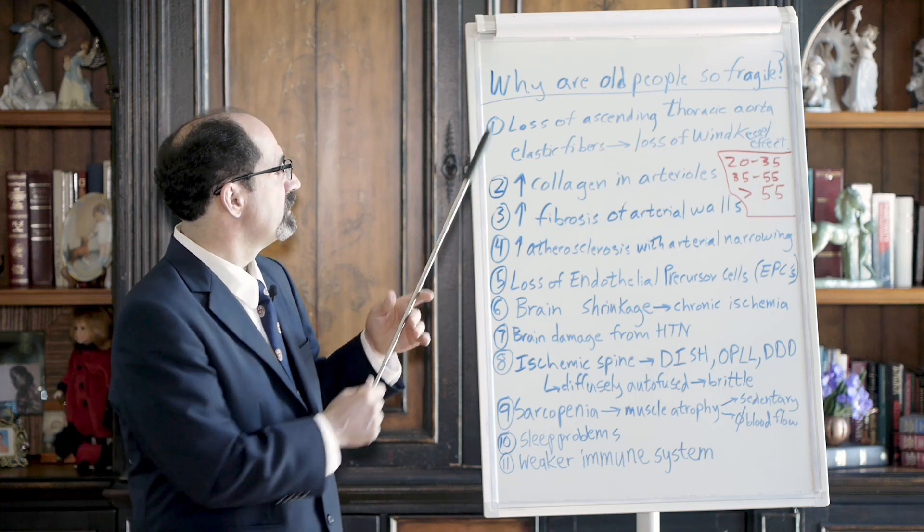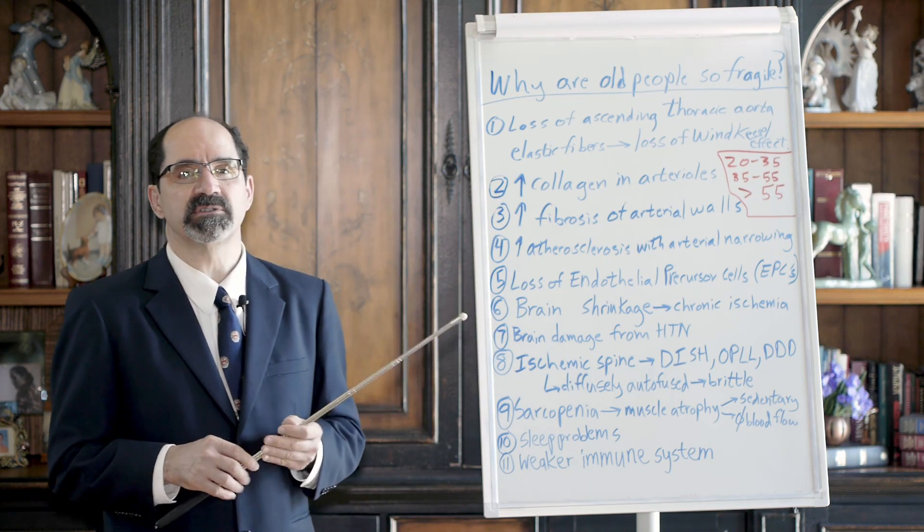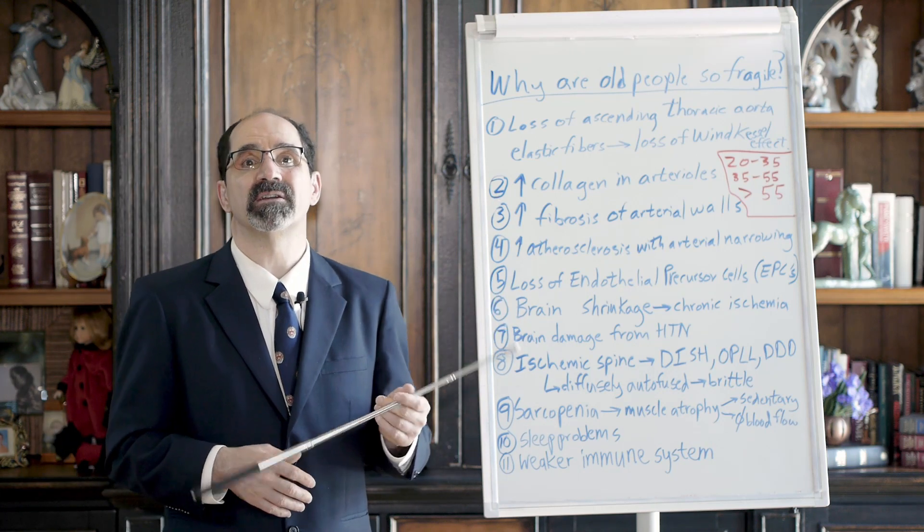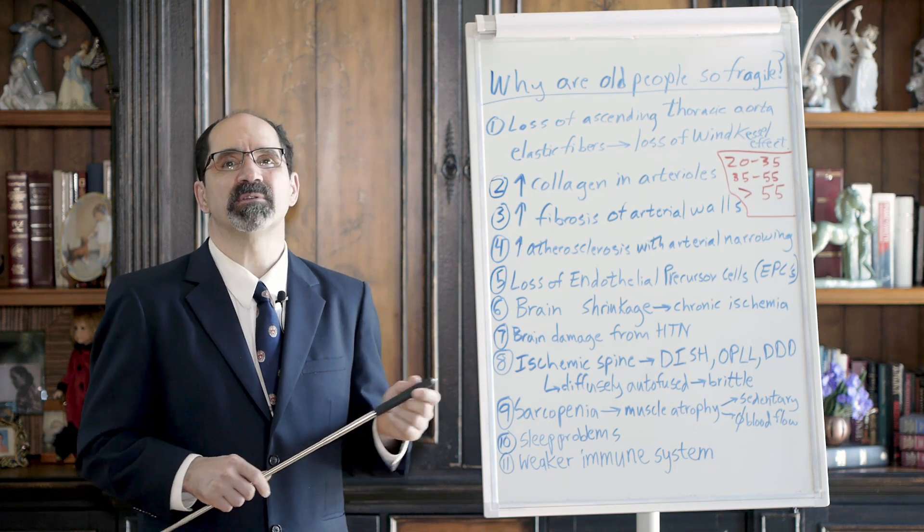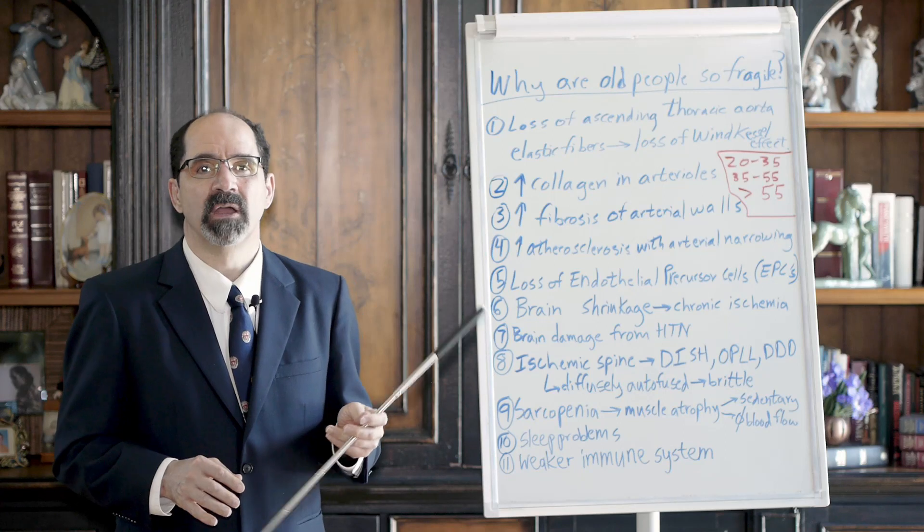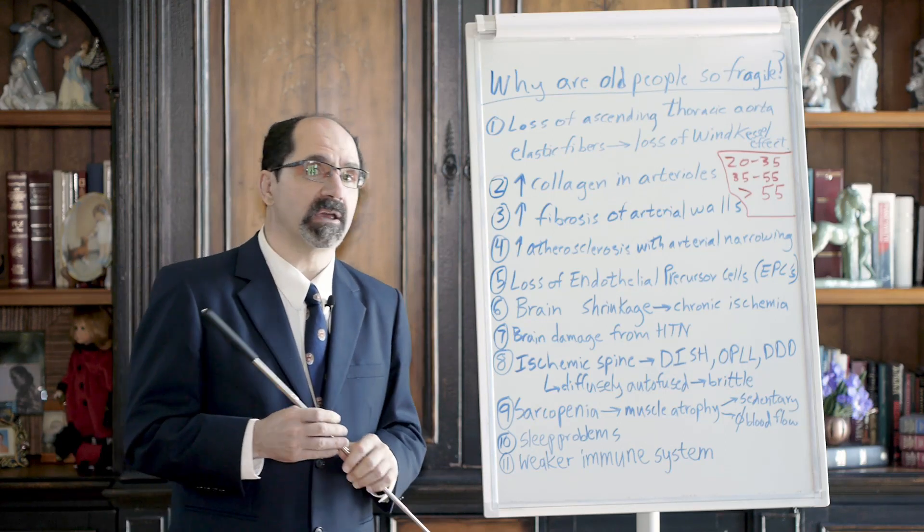These are all the things that make old people weak and fragile and demented. The good news is most of this stuff is avoidable at least to some degree so you can slow down the aging process quite a lot. Most people die like 20 to 30 or 40 years earlier than they had to just because they have a lot of bad habits. So if you have good habits, you've got a better chance to live a long, healthy, happy life.